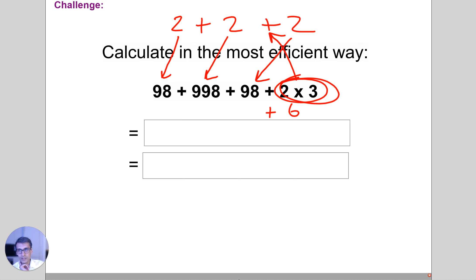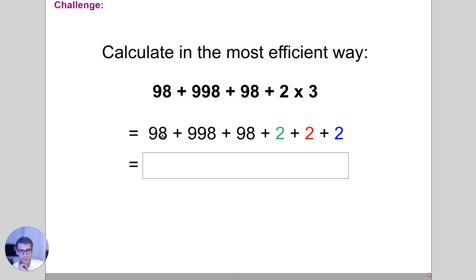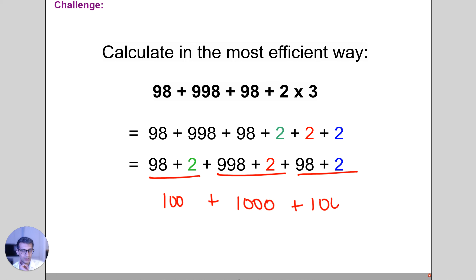So let's just tidy this up a bit. So what you see here is we are going to get 98 + 2, plus 998 + 2, plus 98 + 2. You distribute the twos amongst all of these, and we know that this is going to be 100 plus this is going to be 1000 plus this is going to be 100. So this turns out to be 1,200.